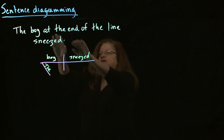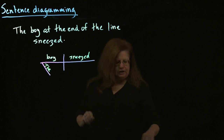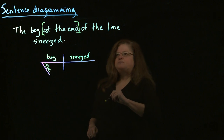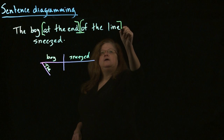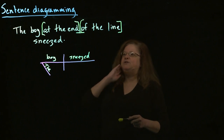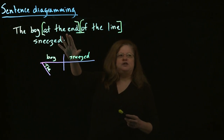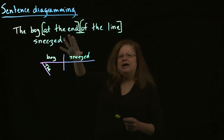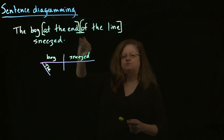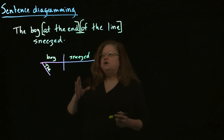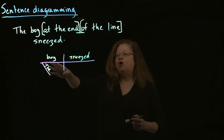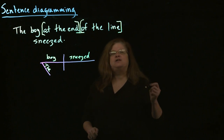We have 'at the end' — 'at' is our preposition and 'the end' is the noun phrase, so that's a prepositional phrase. And we have another one: 'of the line,' with 'of' as our preposition and 'the line' as the noun phrase. We need to figure out what each is acting as. Looking at this sentence, 'at the end' describes 'boy' — it's saying which boy. That makes it adjectival.